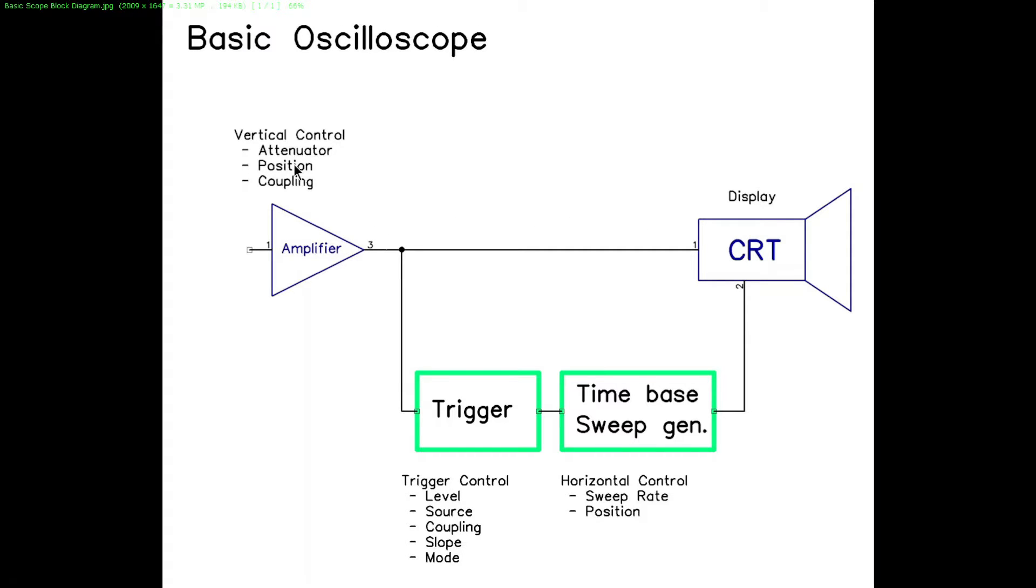The vertical control allows us to adjust for the amplitude of the signal for proper display and measurement. Some of the common sub-functions are the attenuator, which is actually the control of the amplitude, and we can also control the position on the scope screen, up or down, and what kind of coupling that we have. Coupling choices are usually DC or direct, and AC which removes a DC component usually by passing the signal through a capacitor, and then ground. The ground position disconnects the signal and shorts the internal amplifier input to ground. This will allow you to set the vertical position appropriately where you want to see it on the screen.